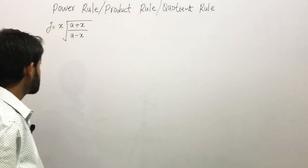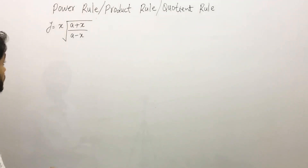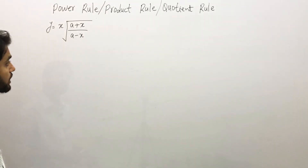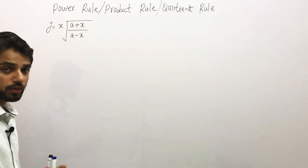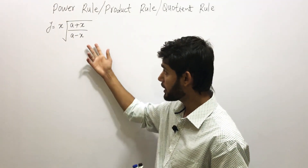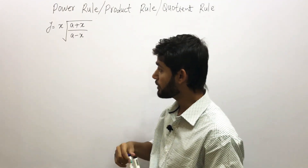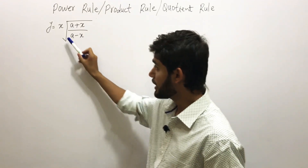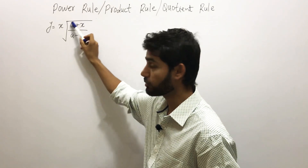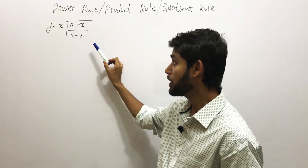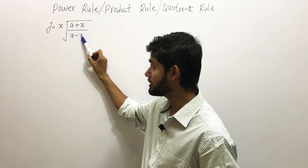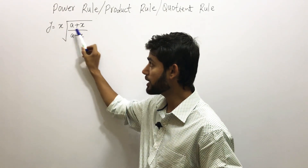The function that we have now is y equals x times the square root of (a+x)/(a−x). First of all, we need to take a very careful look at this function. We realize that x is one term and the square root of (a+x)/(a−x) is another term.